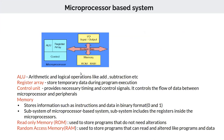Let us look at a general block diagram of a microprocessor. It consists of an Arithmetic Logic Unit (ALU), a register array for storing intermediate results temporarily, and a control unit that communicates with the ALU, the register array, and outside I/O devices and memory. The control unit controls the flow of all data.